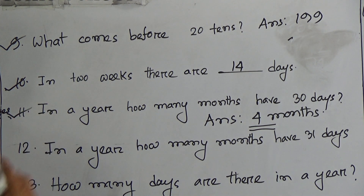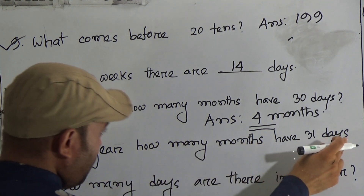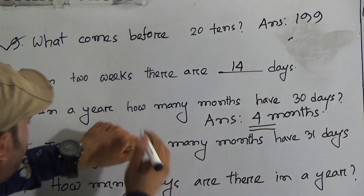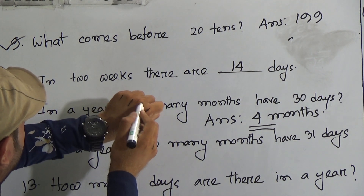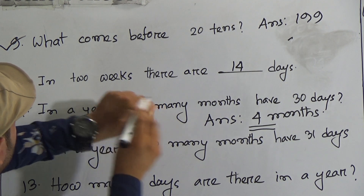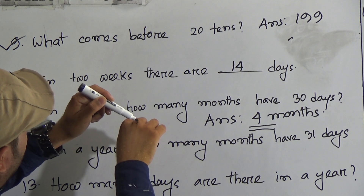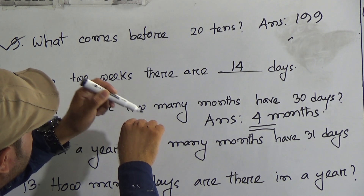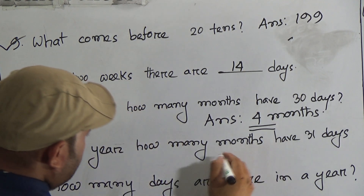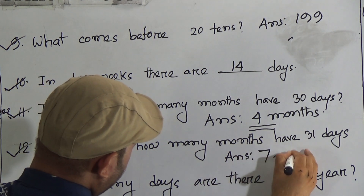The next question: in a year, how many months have 31 days? Similarly, using the upper portion of the knuckles: January, February, March, April, May, June, July, August, September, October, November, December. Counting the upper portions: 1, 2, 3, 4, 5, 6, 7 — so the answer is seven months have 31 days.